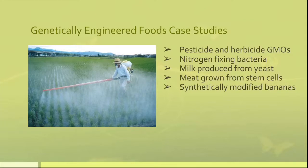GMO crops are created with pesticide and herbicide traits so that farmers do not have to apply the chemicals themselves to the crops, theoretically reducing the environmental and human health hazards caused by the chemicals. With support of GMOs, it will pave the way to advancing the technology to create synthetically modified organisms that will benefit the environment further.